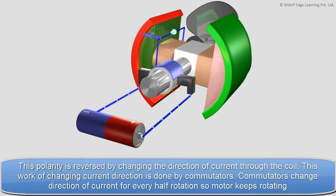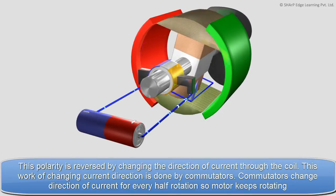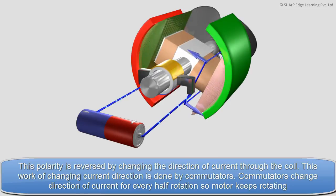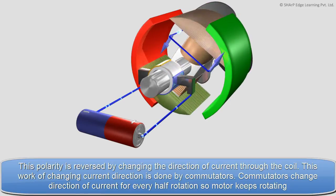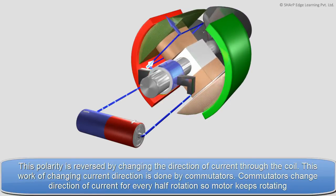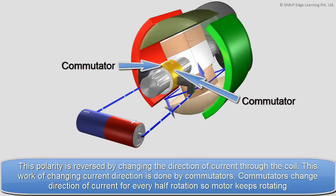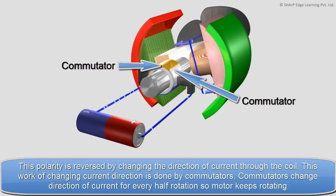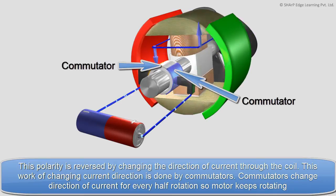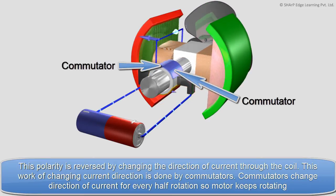This polarity is reversed by changing the direction of current through the coil. This work of changing current direction is done by commutators. Commutators change direction of current for every half rotation, so motor keeps rotating.